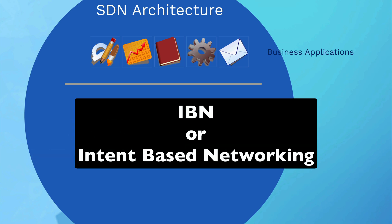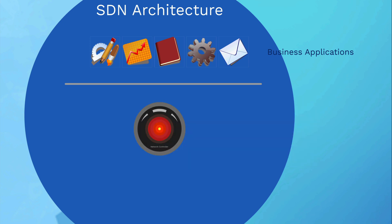Remember we talked about IBN, or intent-based networking? This is where we define the intent of what we want the network to do. As a network admin, you might log into a GUI portal and say, I want to add a new SD-WAN node to my network. The way the controller talks to the business applications is through northbound APIs,